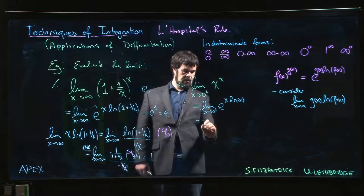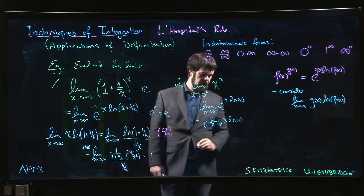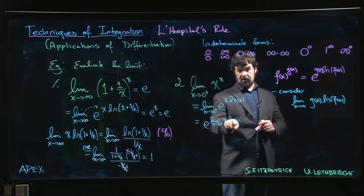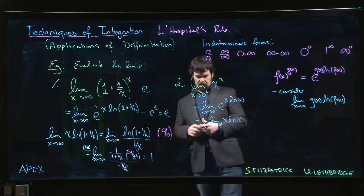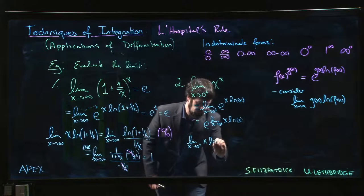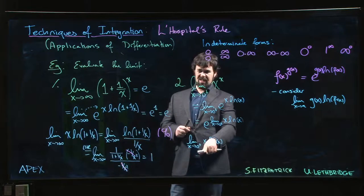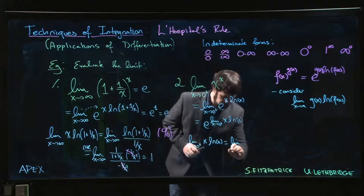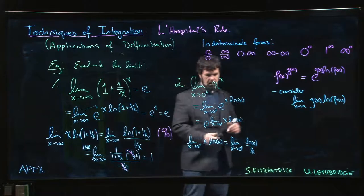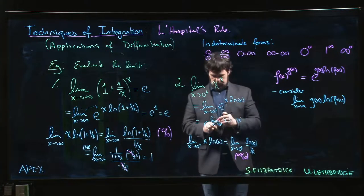We rewrite the limit as e to the limit of x·log(x) as x goes to zero from the right. This is a zero times infinity limit, and we need to apply L'Hôpital's rule. We could keep x on top and put 1/log(x) on the bottom, but that's not easy. Instead, keep log(x) on top and put 1/x on the bottom. This gives an infinity over infinity form, so L'Hôpital's rule applies.